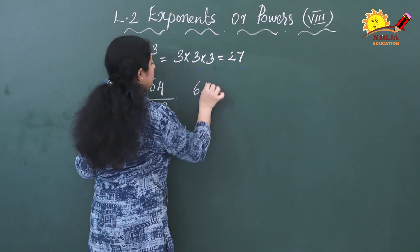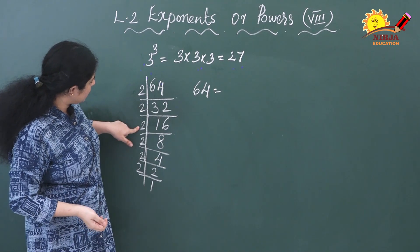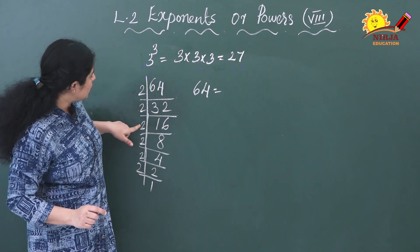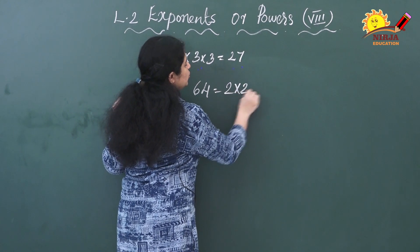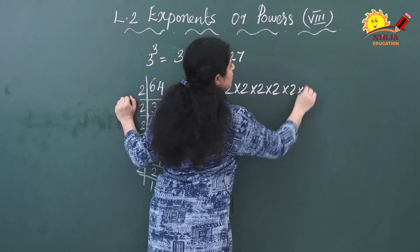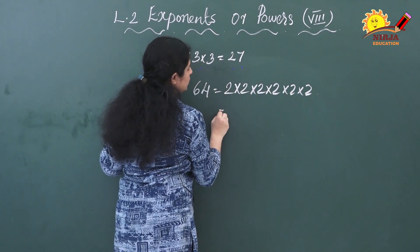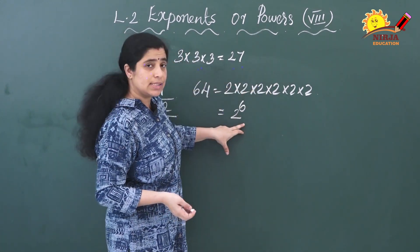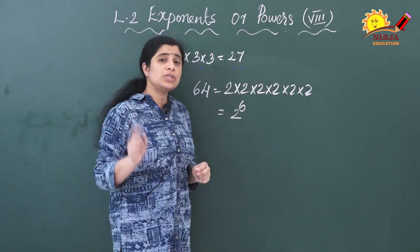Now I am going to write this. How many 2s are there? 1, 2, 3, 4, 5, 6 — six 2s. That means you are multiplying 2 six times. That is equal to 2 raised to 6.